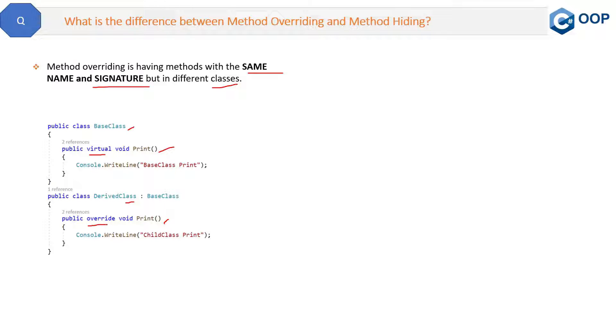Now what is method hiding? In method hiding you can hide the implementation of the methods of the base class from the derived class using the new keyword. So this is method hiding.